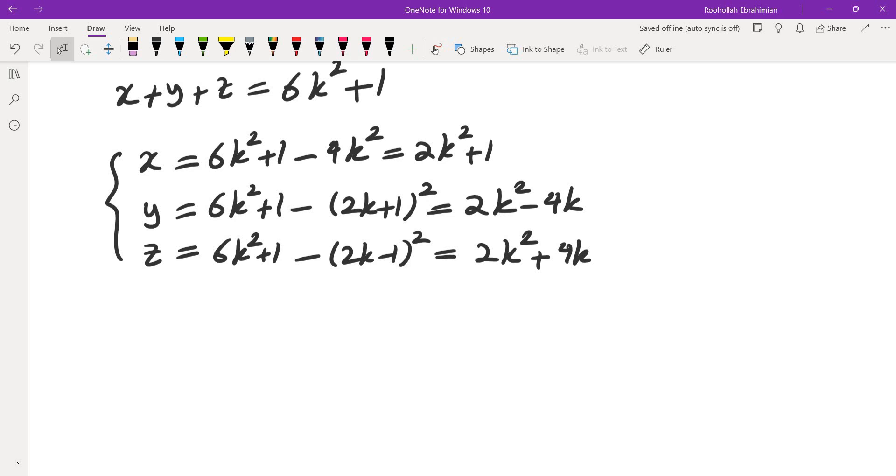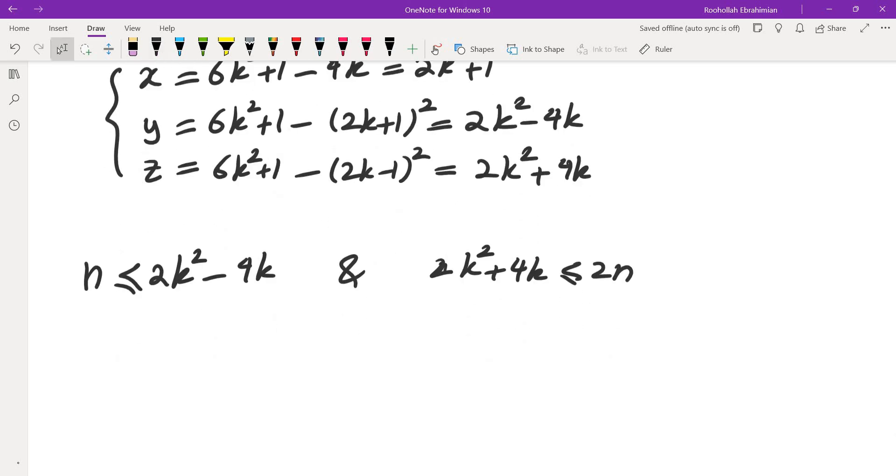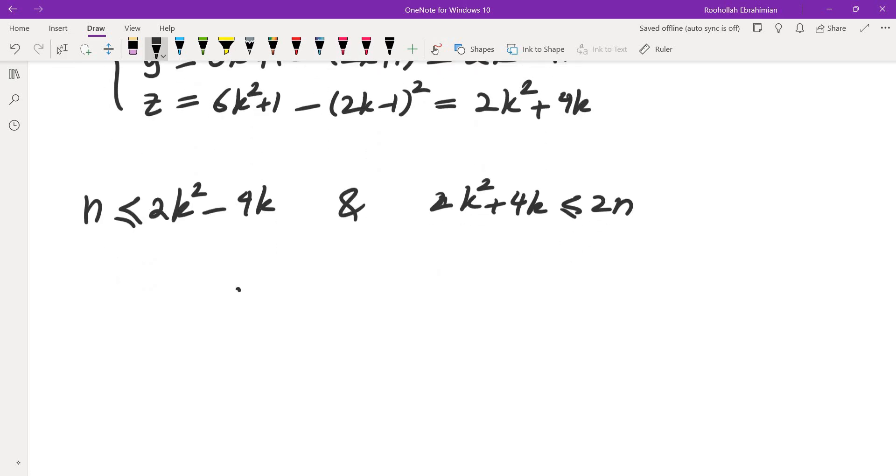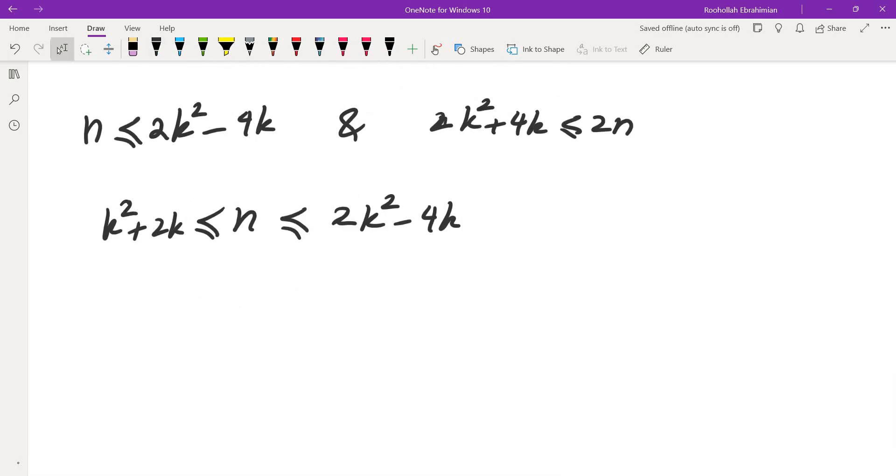So these are the three numbers. Now, if these three numbers are between n and 2n, then we would be done. The smaller one is 2k squared minus 4k. So I need this to be greater than or equal to n, and I also need the largest one, which is 2k squared plus 4k, to be less than or equal to 2n. If I show that for every n, there is a k that satisfies this, then I'm done. So let's figure out what's the range for n. And n would be between 2k squared minus 4k, and on the other side, it would be k squared plus 2k.